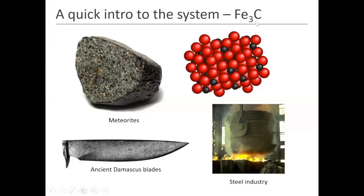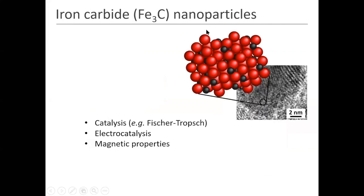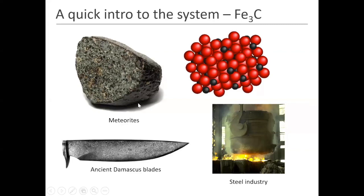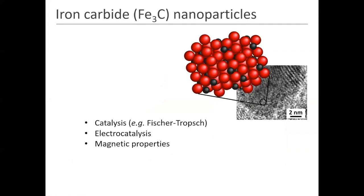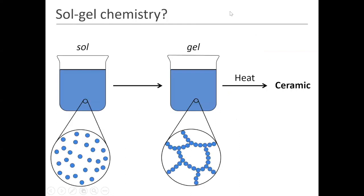The material we've been working with recently is this iron carbide material, Fe3C. It's a historically really important material in geology, in historical materials, and in industry — the steel industry is the most important region where this material is used. What we're particularly interested in is making nanoparticles of this material, because more recently the area of interest is in catalysis and electrocatalysis, and also in terms of the magnetic properties — for example, using it in magnetic nanoparticles for various medical applications.